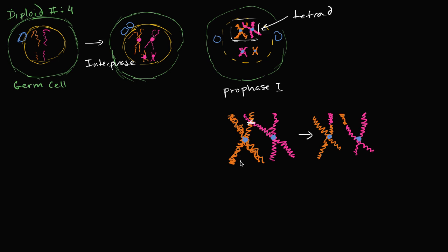We've talked about sexual reproduction before, and sexual reproduction introduces variation into a population. Obviously, when different sperms find different eggs, that introduces variation. But even amongst homologous pairs, you can actually have exchange between chromosomes. And that's interesting, because each of these chromosomes code for a bunch of different genes.